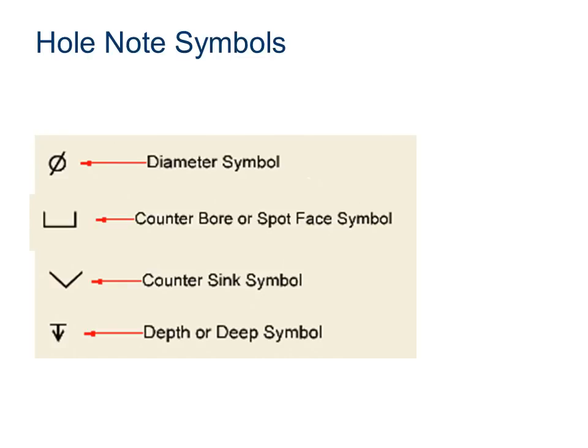Now, these are the common symbols that you'll see when you're annotating a hole on your IDW drawings. Diameter symbol. Just a circle with a line through it. The Greek letter phi. This is the diameter symbol.